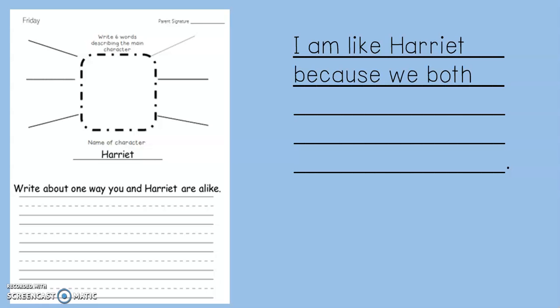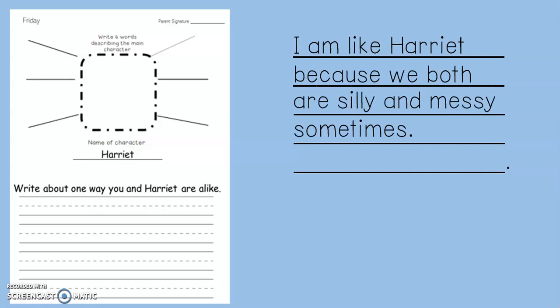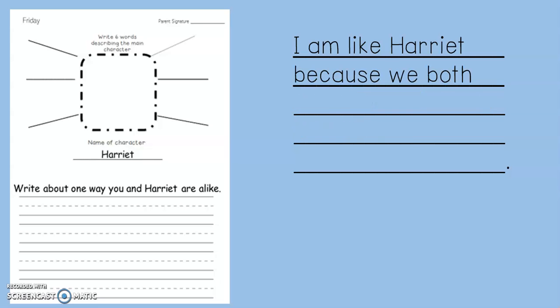In that little box in the middle, you'll draw a picture of Harriet. On the bottom, it says: write about one way you and Harriet are alike. I put a sentence starter on this screen — it says: I am like Harriet because we both... You'll think of one thing that's the same about you and the character. Maybe you are both really silly, maybe you both need a hug when you have a hard time, maybe you both can make a big mess. For example, I said: I'm like Harriet because we both are silly and messy sometimes. You will write something different — think of something that is the same about you and Harriet, on the inside or something you do that is the same.